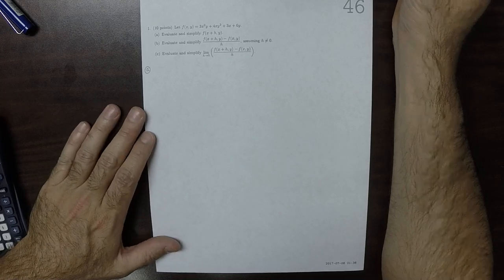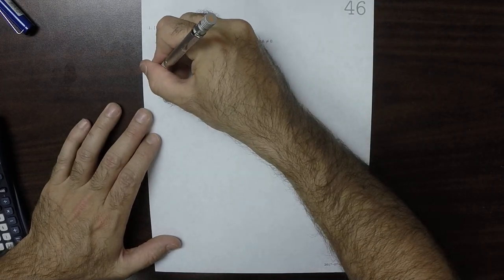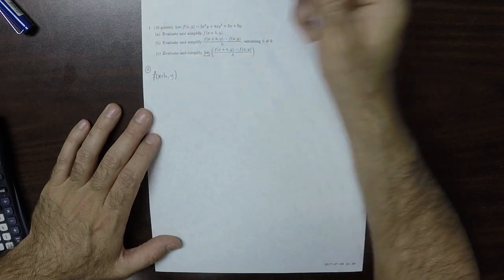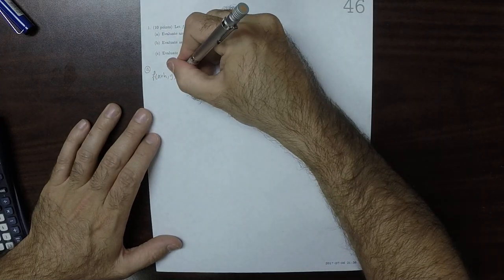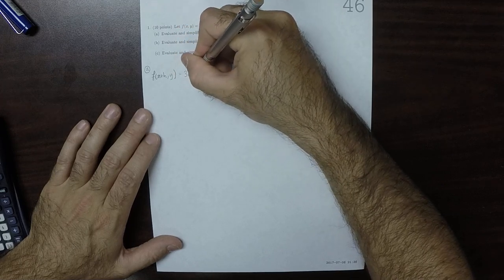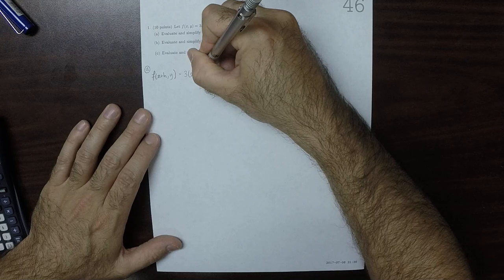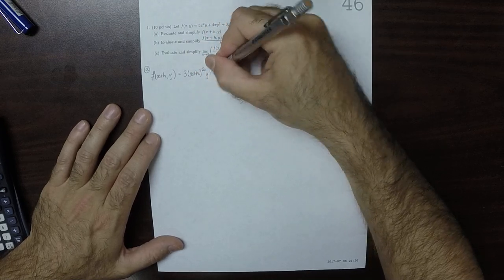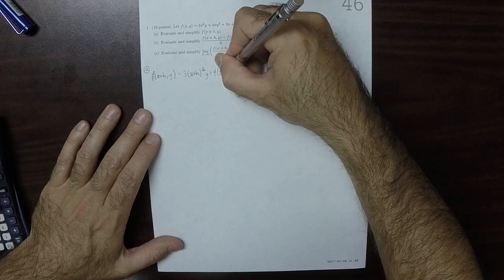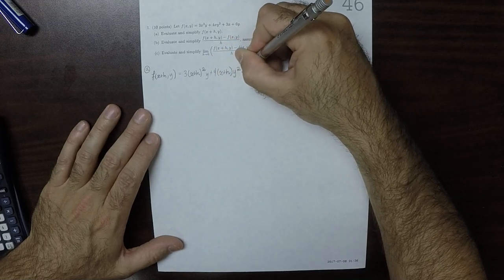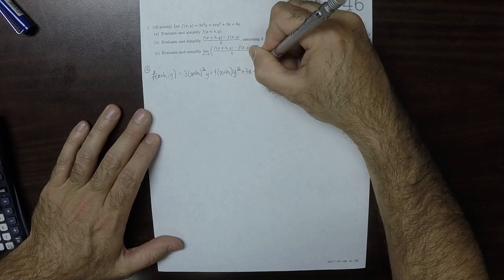Okay, so f of x plus h comma y, and we're supposed to simplify this, so this would be 3 x plus h all squared y plus 4 x plus h y squared plus 3x plus 6y.